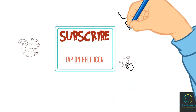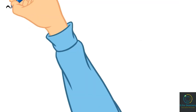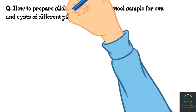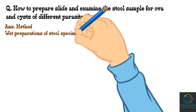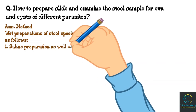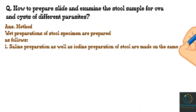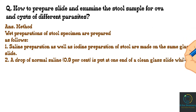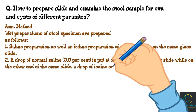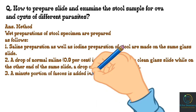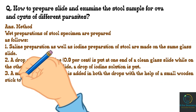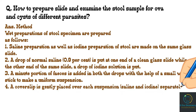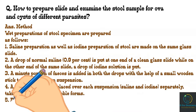Question 1: How to prepare a slide and examine the stool sample for ova and cysts of different parasites? Method: Wet preparations of stool specimen are prepared as follows. Saline preparation as well as iodine preparation of stool are made on the same glass slide. A drop of normal saline (0.9%) is put at one end of a clean glass slide, while on the other end a drop of iodine solution is put. A minor portion of feces is added to both drops with a small wooden stick to make a uniform suspension. A cover slip is gently placed over each suspension — saline and iodine separately — taking care that no air bubble forms.